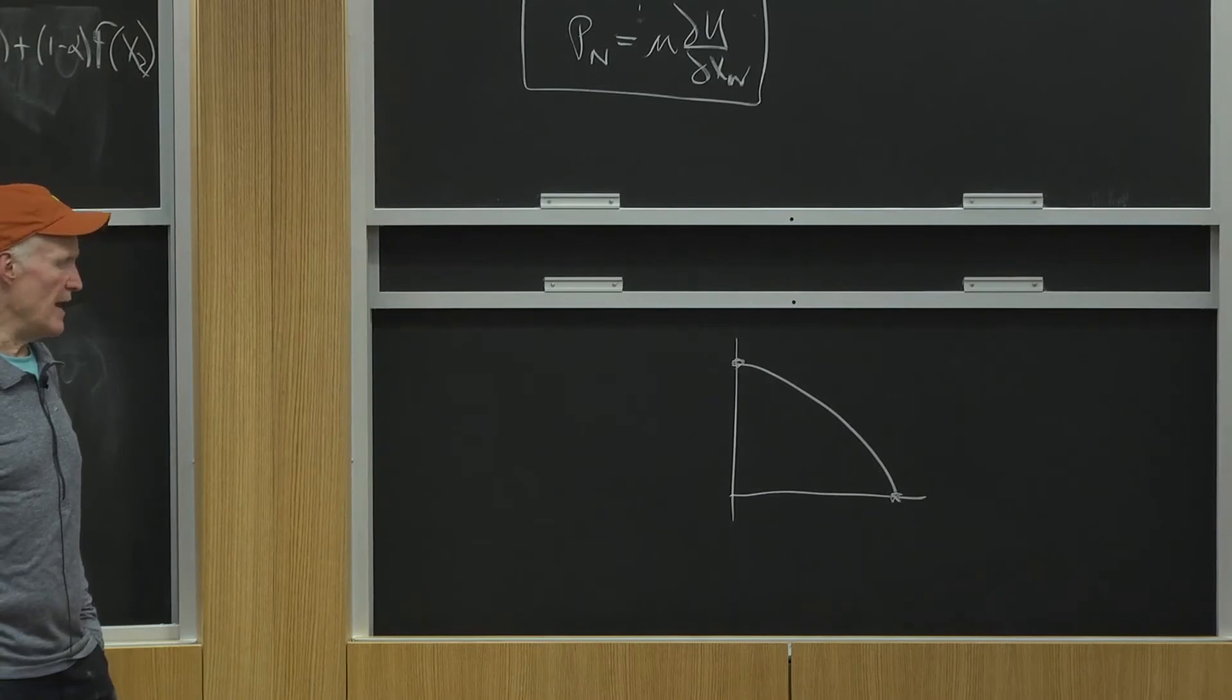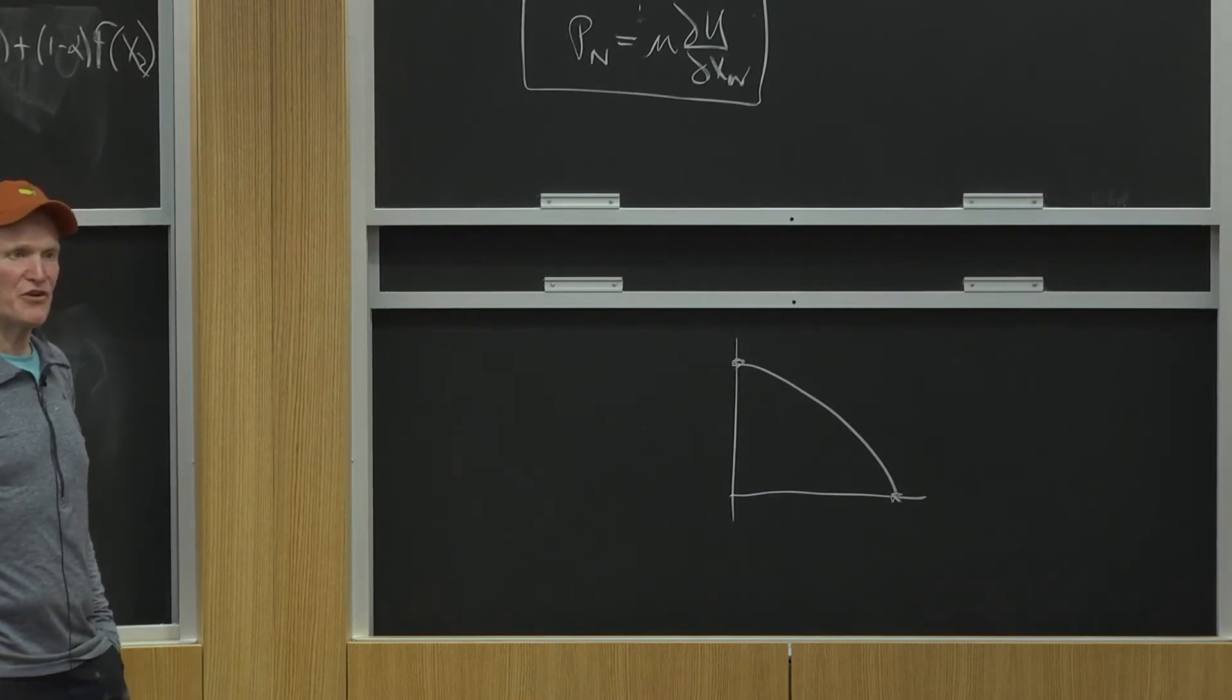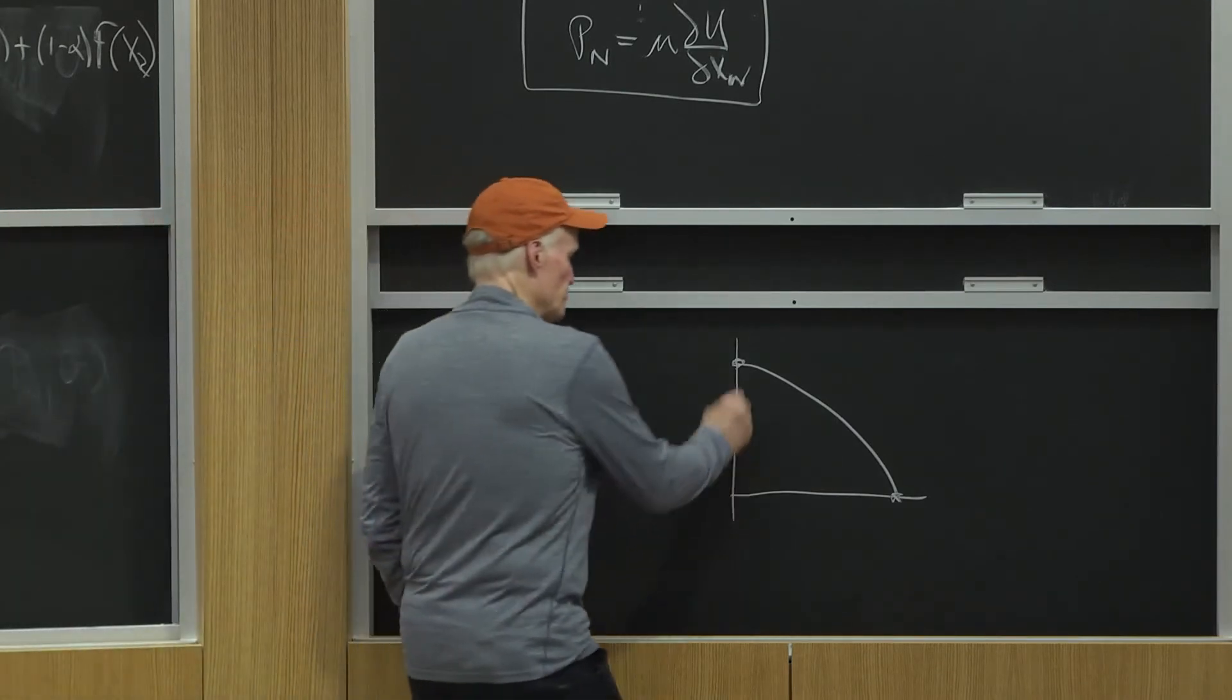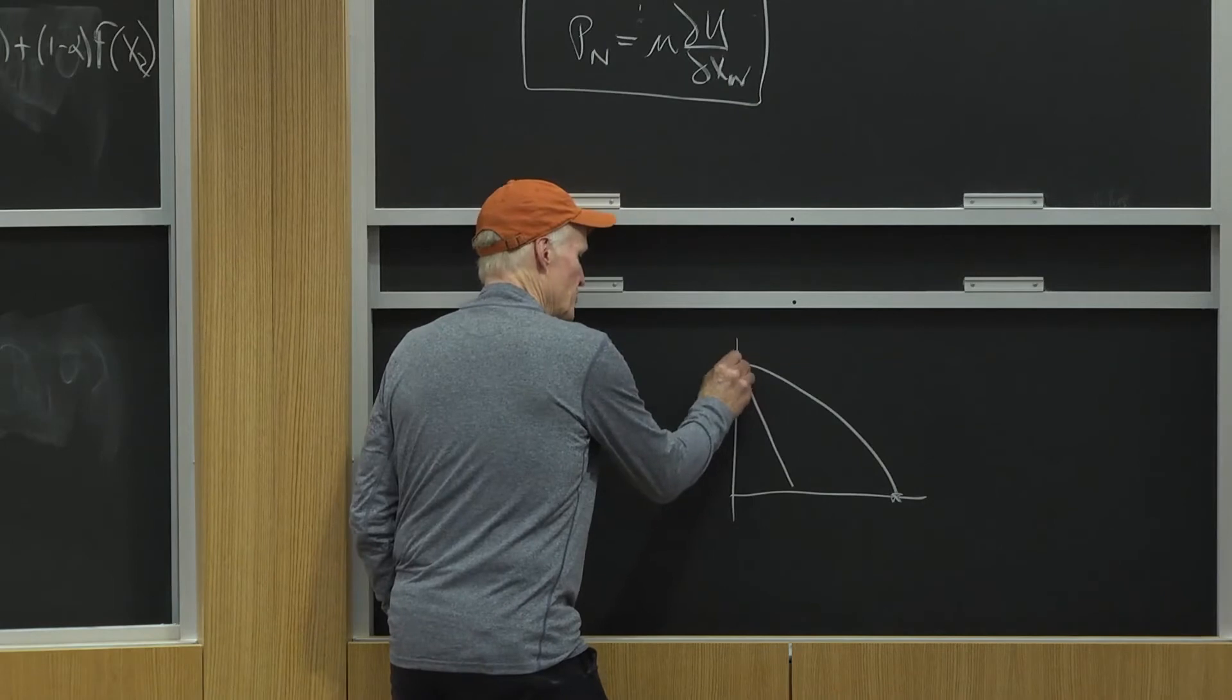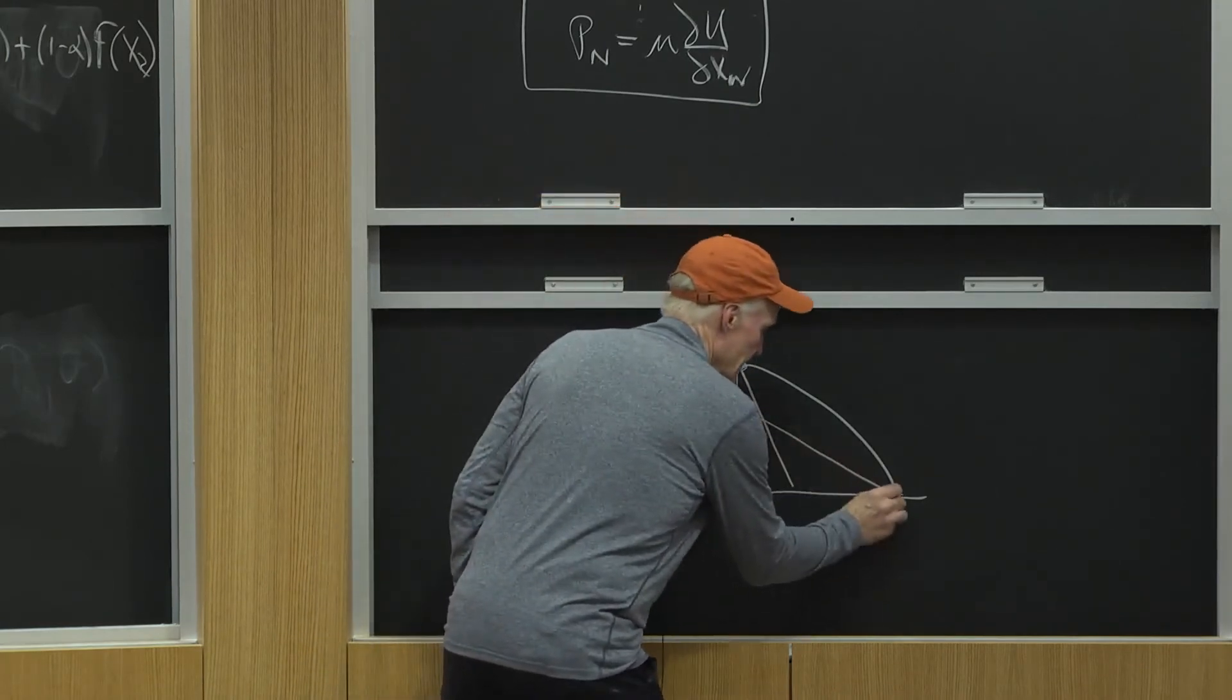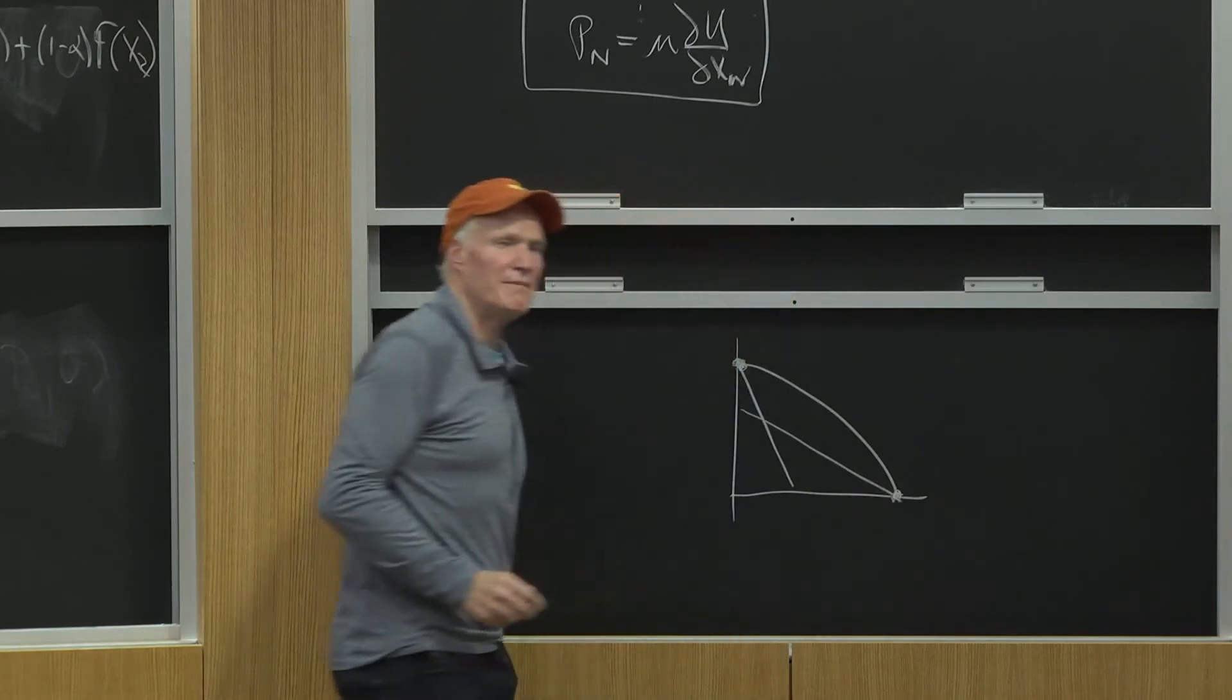All right? Now, how is a guy with that indifference curve going to minimize cost? Well, if his lines are steep, he's going to minimize cost at this point. If his lines are flat, he's going to minimize cost at that point. Well,